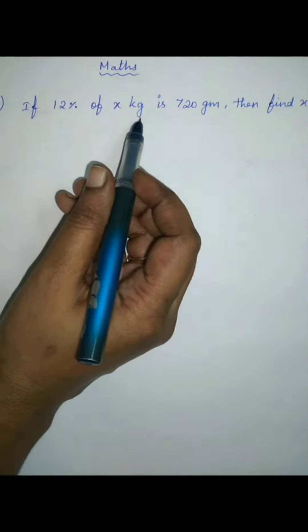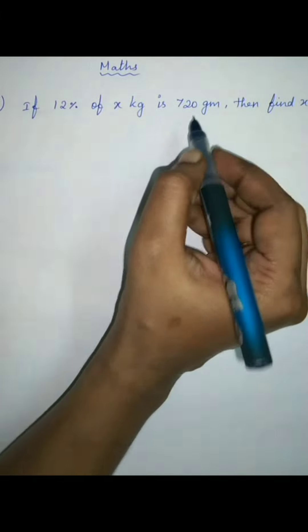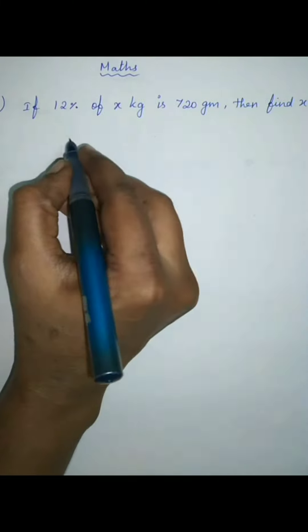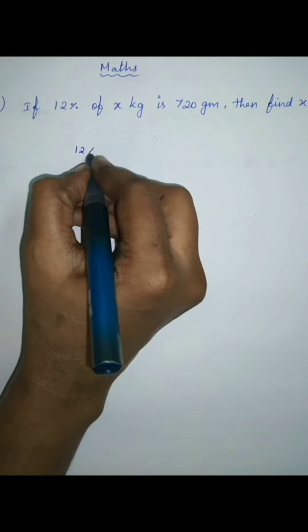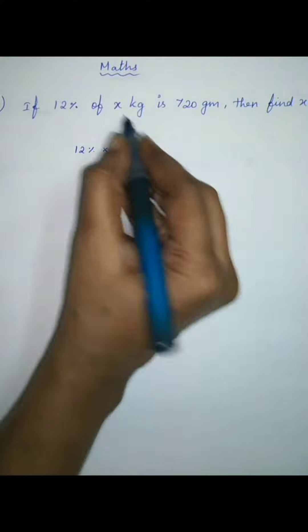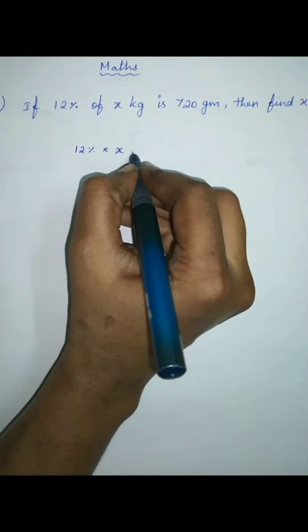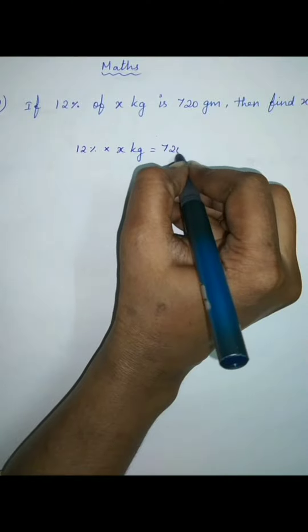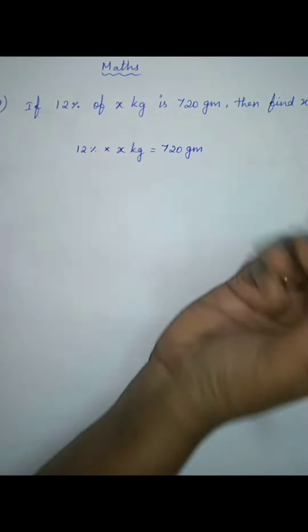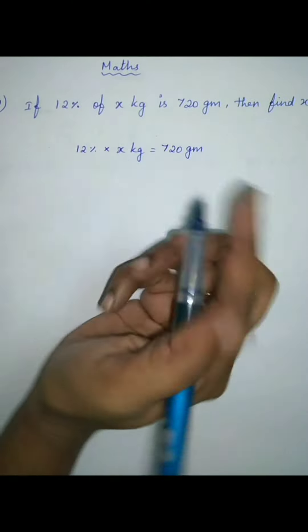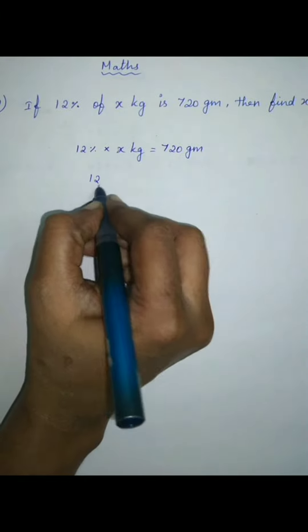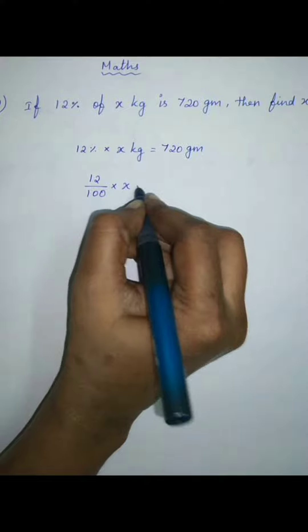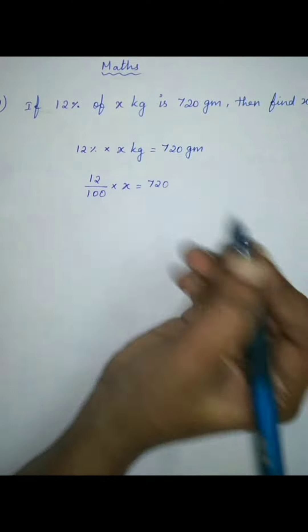If 12% of x kg is 720 grams, then find x. So, 12% of x kg equals 720 grams. Now find out x. So, 12 by 100 into x equals 720 grams.